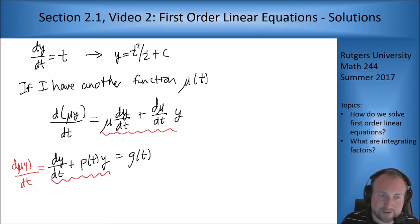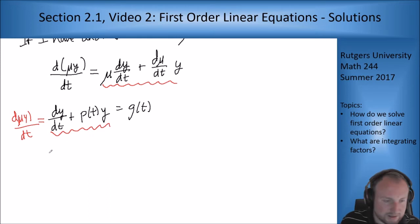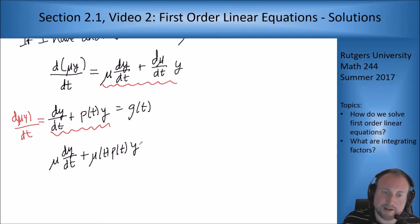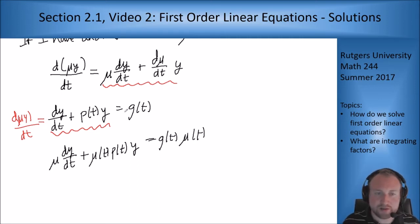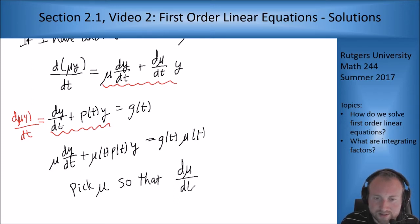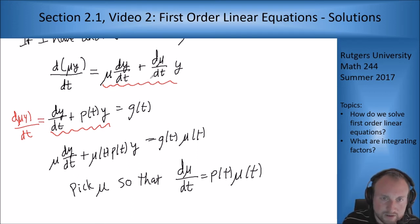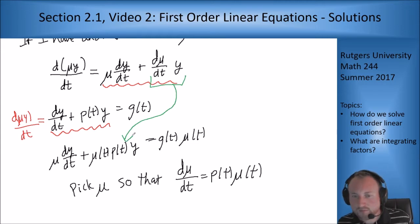Well, if I take this equation here and multiply both sides by mu, what do I get? I get then that mu times dy/dt plus mu of t p of t y equals g of t times mu of t. That is multiplying through this equation by mu. Now, I want this to match the d mu y/dt from above. So what do I need? I need to pick mu so that d mu/dt equals p of t mu of t. If I can do that, then this term matches this term. And then we're in good shape.